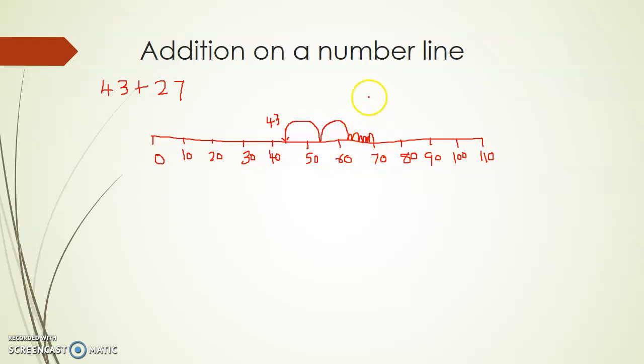We reach 70. So 43 plus 27 is 70. From this we have found that. Let us look at another example: 50 plus 36.